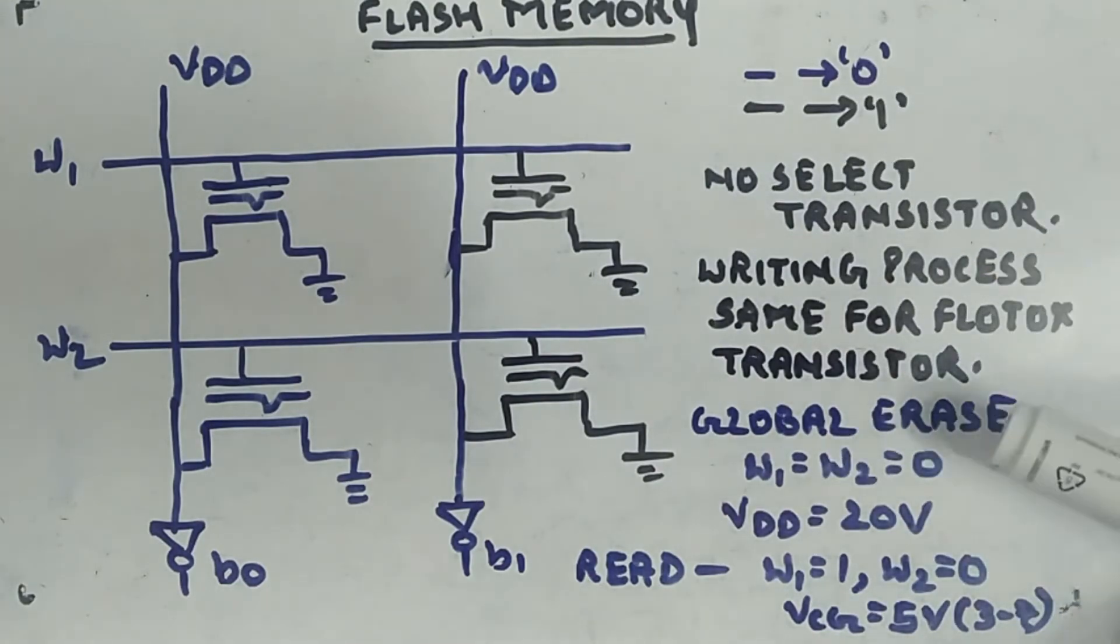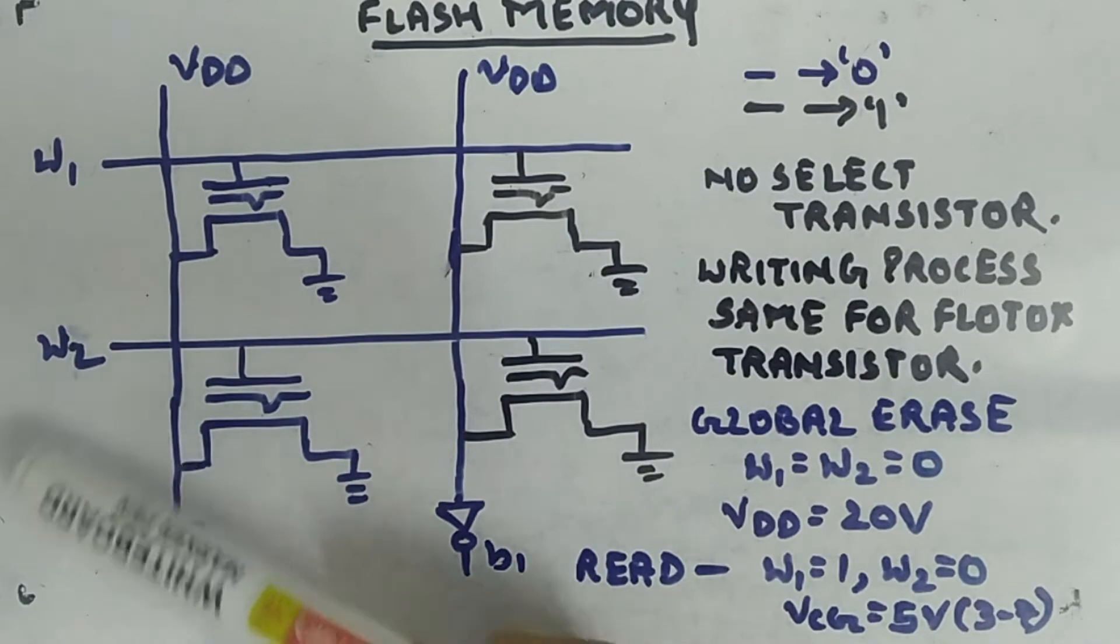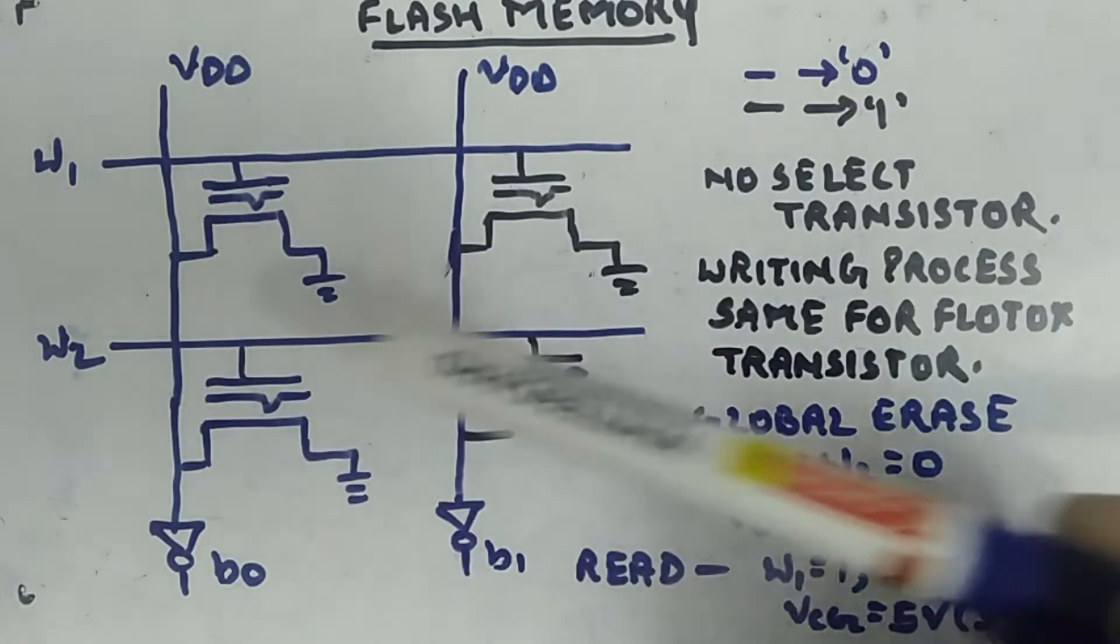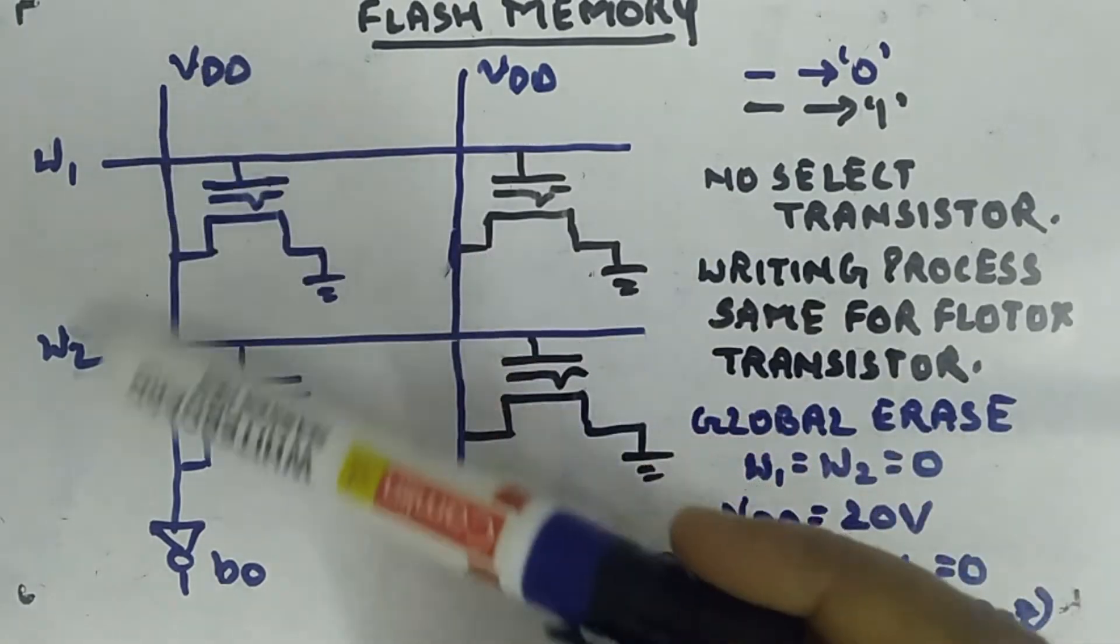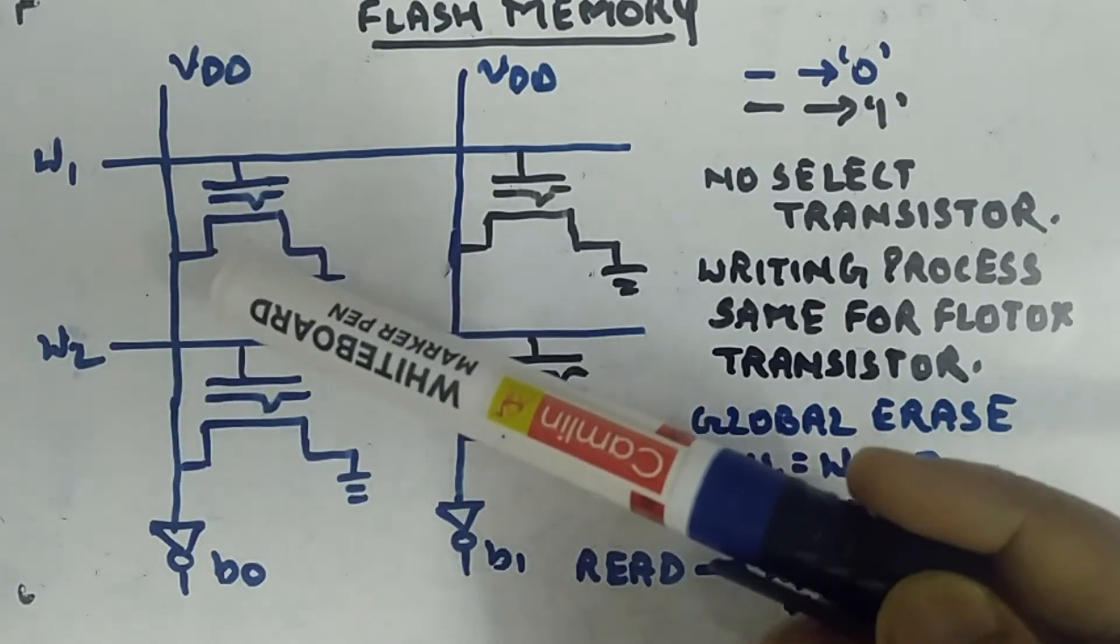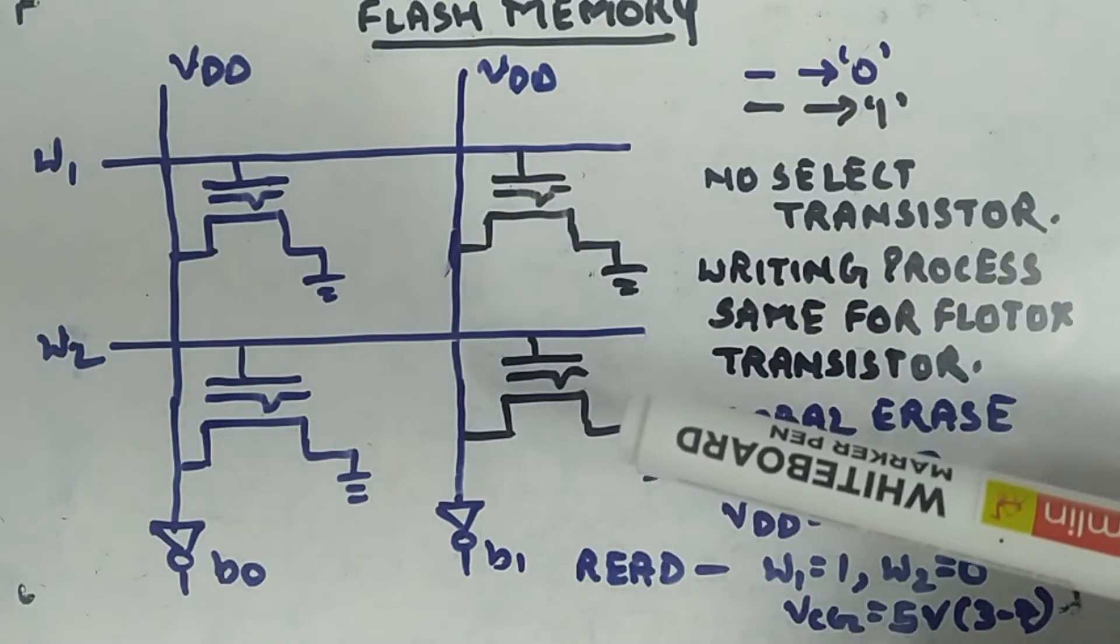If you select logic zero to W1 and W2, they will be getting low gate voltages. If you apply VDD equal to 20 volts for short duration in this line, these two together will get erased. If you apply here, these two will get erased together because you are applying drain-source voltage more than gate voltage.